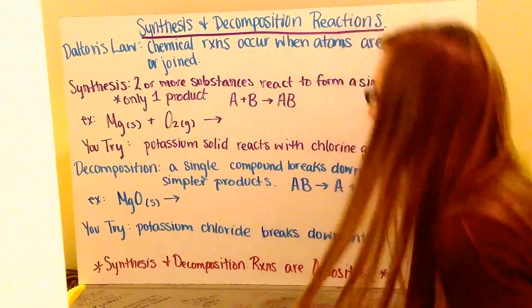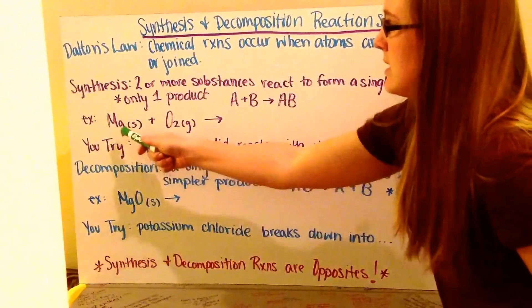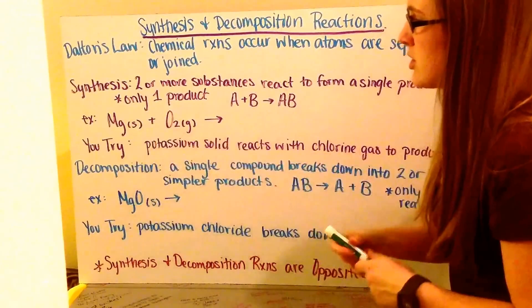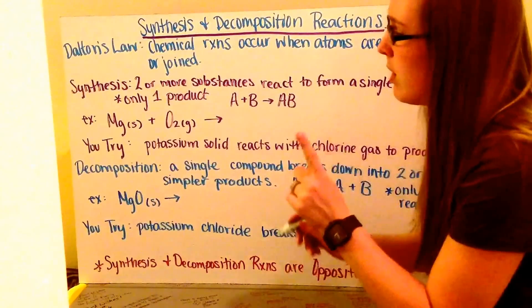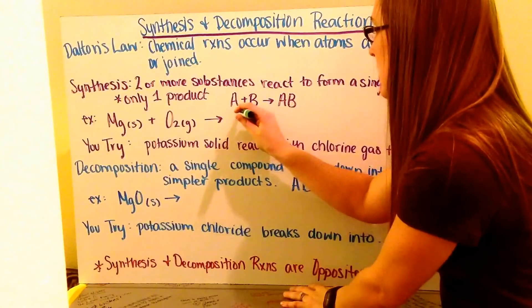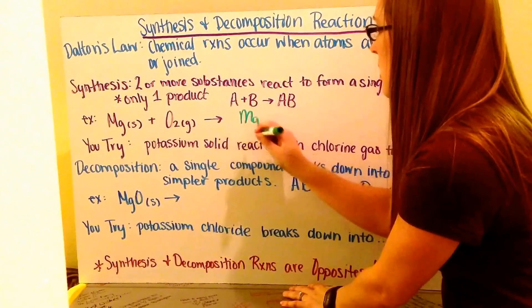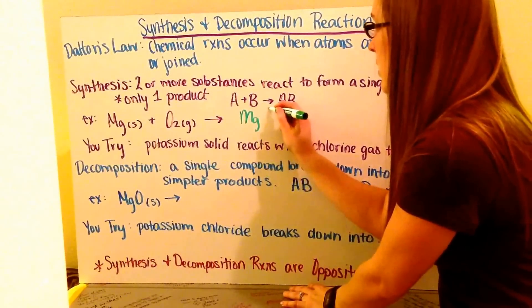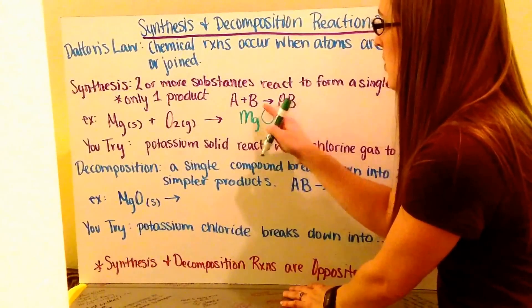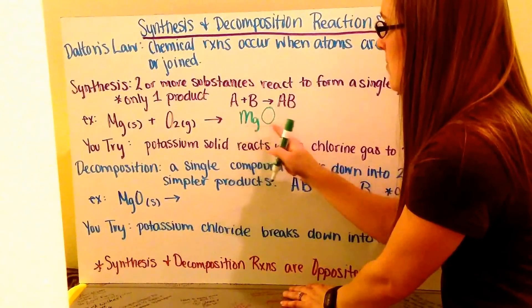For example, if I have magnesium solid plus oxygen gas, they're going to react together to form one product. Magnesium, which is Mg plus two, is going to react with oxygen, which is minus two. Those charges cancel out and make MgO.